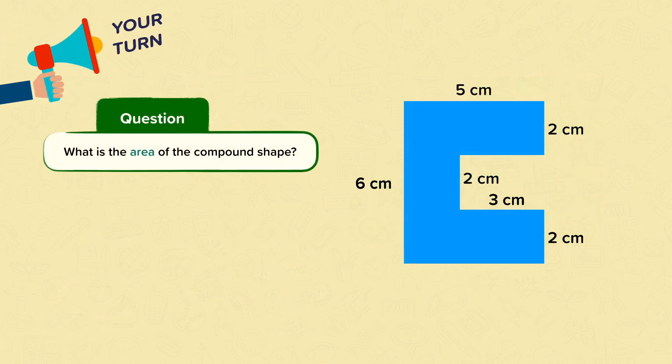Now it's your turn. Pause the video if you need time to think. First we separate the shape into simpler squares and rectangles. This time we don't know the length of all the rectangles — we need to find some missing lengths. We know the length of one of the sides is 5 centimetres and the length of the other side is 3 centimetres, so the missing side of our largest rectangle must be 2 centimetres.